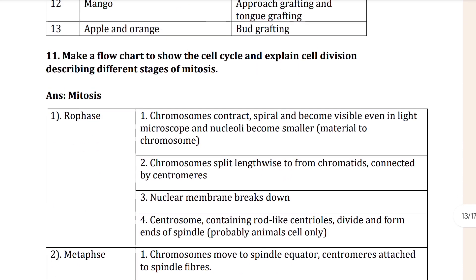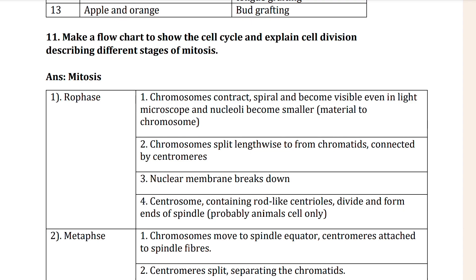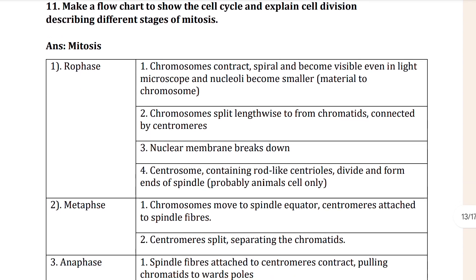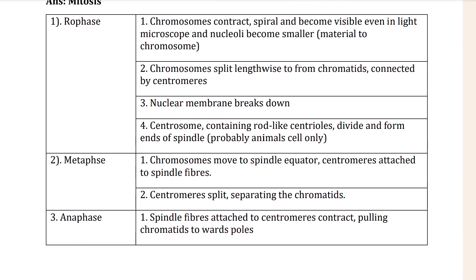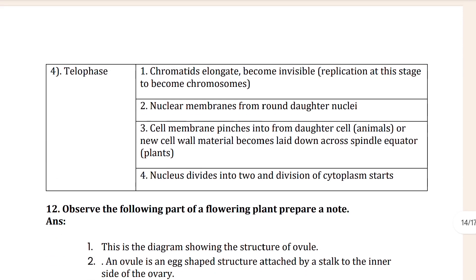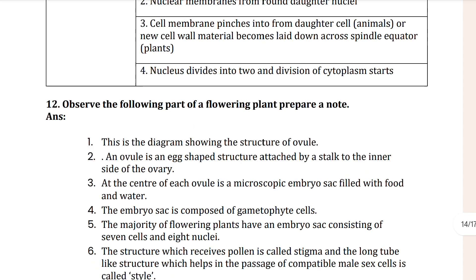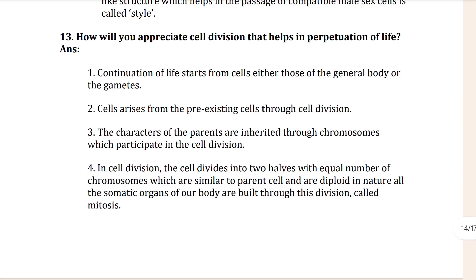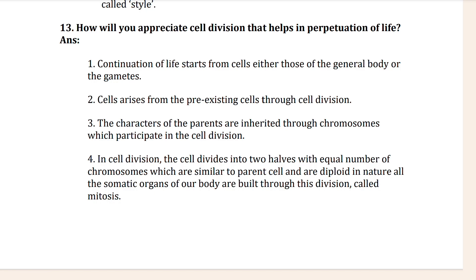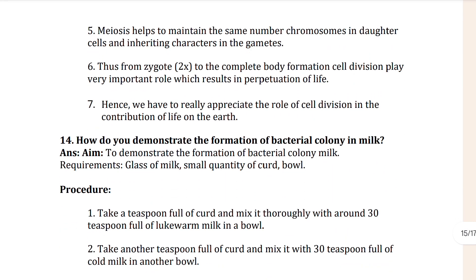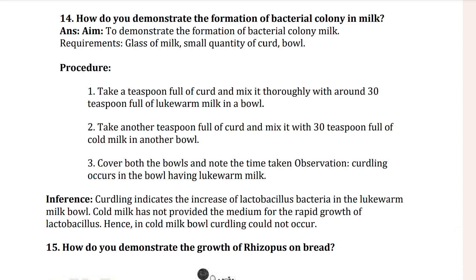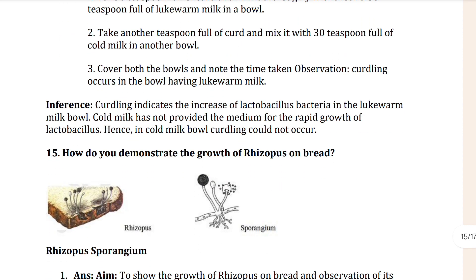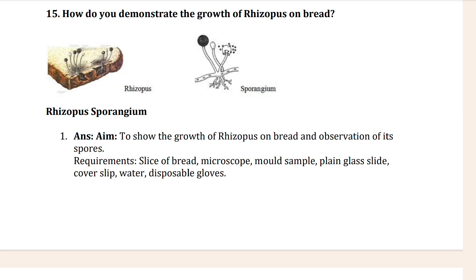The 11th question: make a flowchart of the cell cycle and explain the stages of cell division - describe the differences between different stages. The 12th question: observe the following parts of the flowchart - plants prepare at north. The 13th one is also shown. The 14th question: how do you demonstrate the formation of a bacterial colony in milk? The 15th question: how do you demonstrate the growth of mold on bread?